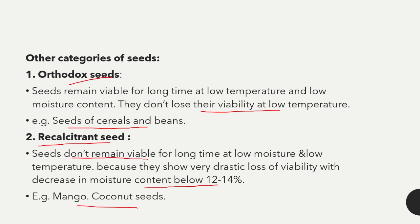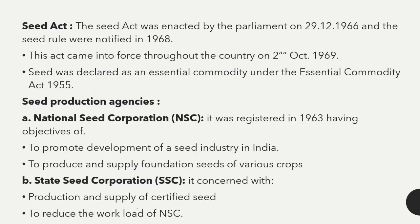The next topic is the Seed Act — enacted by Parliament in 1966, and the Seed Rule was notified in 1968. This act came into force throughout the country on 2 October 1969. Seeds were declared an essential commodity under the Essential Commodity Act 1955.